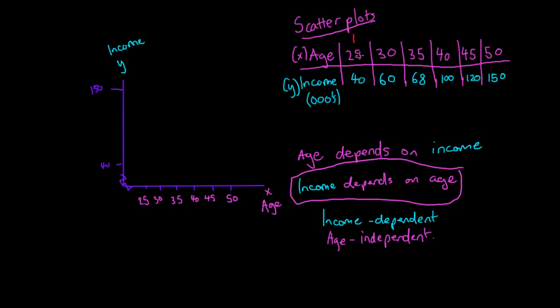We look at the age, which is our x variable, and find the corresponding age down here. Then we go up until we're at the corresponding y value. The y value is 40, so we move upwards until we hit 40 and put a dot there. That's how we plot age and income for the first observation.